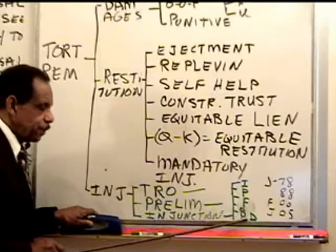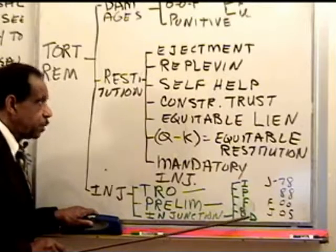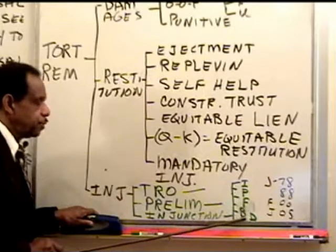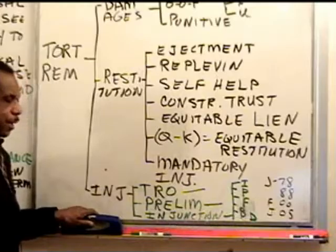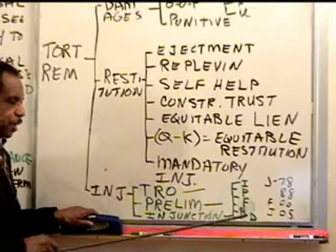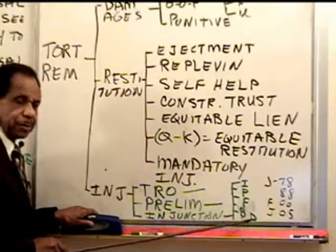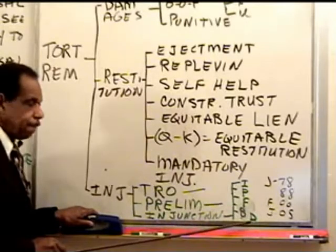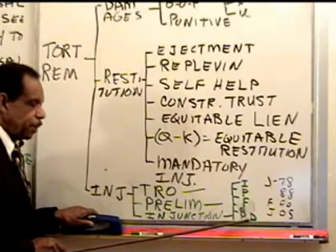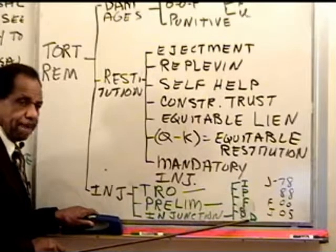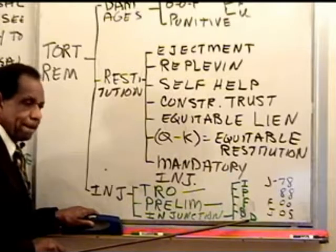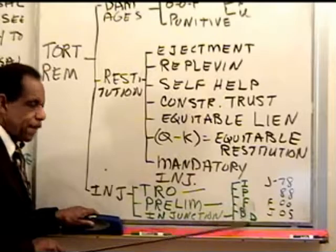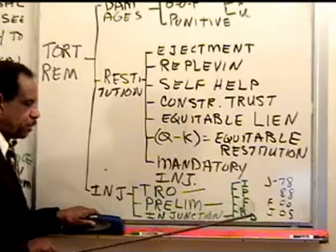And finally, D stands for defenses to equitable injunctions: laches, unclean hands, equity does not enjoin crimes, and the First Amendment.